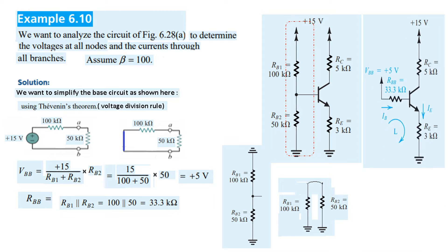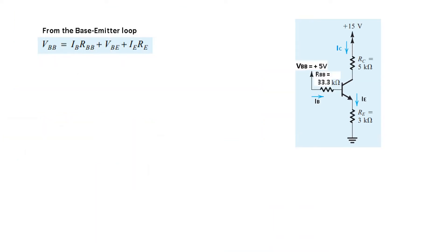So the values calculated are VBB = 5V and RBB = 33.3kΩ. We now apply KVL: VBB = IB·RBB + IE·RE. We use this formula to find the emitter current IE.